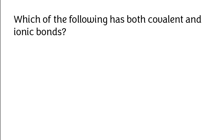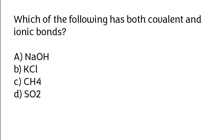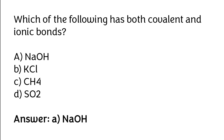Which of the following has both covalent and ionic bonds? NaOH, KCl, CH4, or SO2. The correct answer is option A: NaOH has both covalent and ionic bonds.